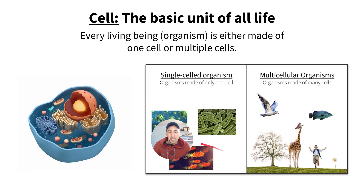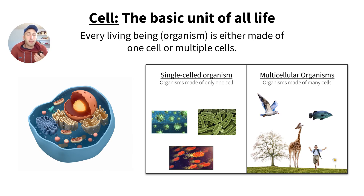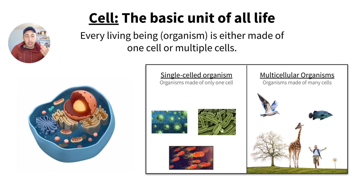The cell is the basic unit of all life. Every organism is either made up of one cell or multiple cells. You have two types of organisms: a single-cell organism, made up of only one cell, like bacteria, and a multicellular organism like us, like birds, plants, trees, and fish, made up of billions and billions of cells.